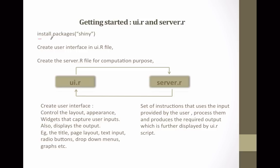To start, use the command install.packages('shiny') to install the Shiny package. We create the user interface in a file called UI.R. We also create another file called server.R — this file contains the instructions or code for computation, to process the inputs which are fed through the user interface. Here is a small flow showing how UI.R interacts with server.R.